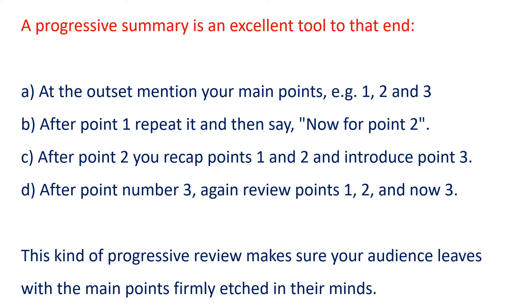A: at the outset, mention your main points — for example, one, two, and three. B: after point one, repeat it and then say, 'Now for point two.' C: after point two, you recap points one and two and introduce point three. D: after point number three, again review points one, two, and now three. This kind of progressive review makes sure your audience leaves with the main points firmly etched in their minds.